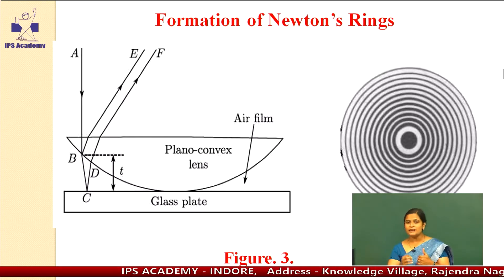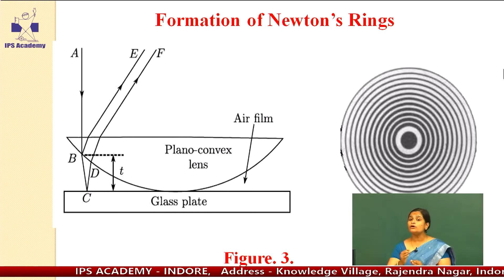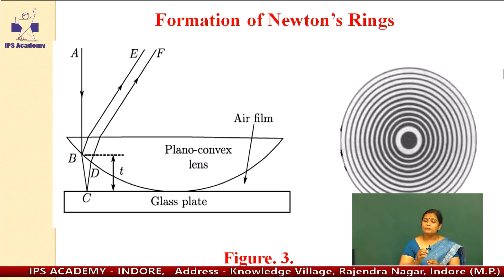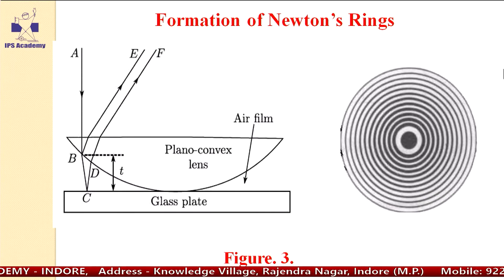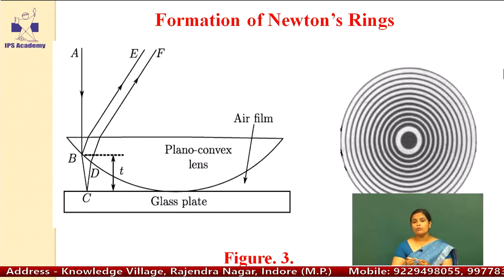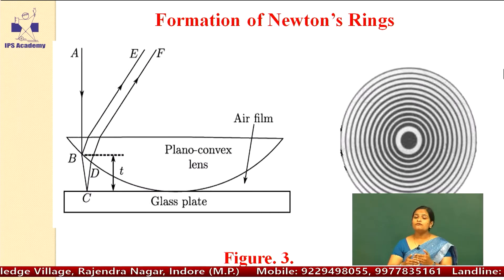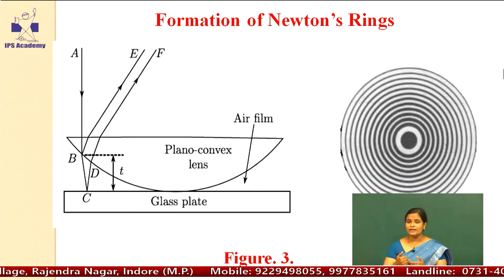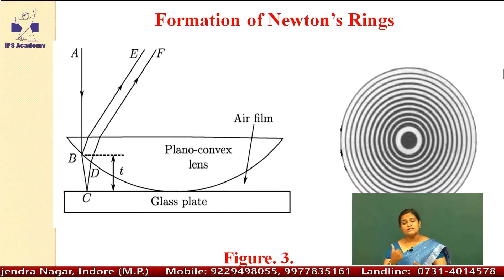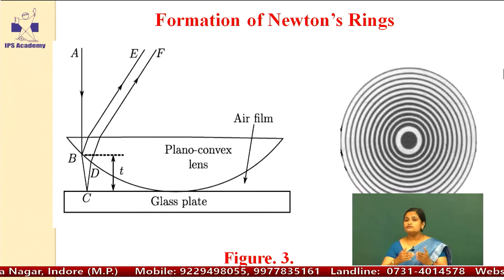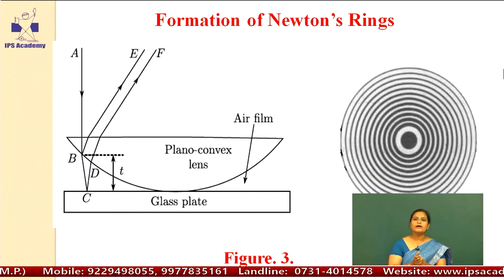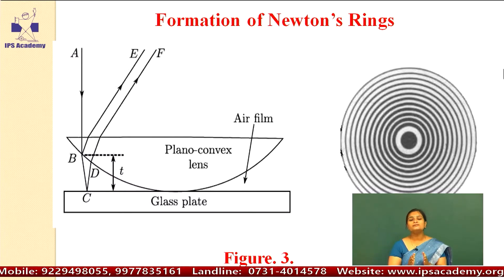The interference occurs because of the division of amplitude, because there is a thin film in between the plano-convex lens and the glass plate. The light reflecting from point B and the light reflecting from point C — when these two beams interfere with each other, we get interference fringes on the screen: dark fringes and bright fringes in the form of Newton's rings. This was observed first by Newton; hence, this is known as Newton's ring experiment.